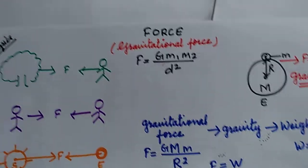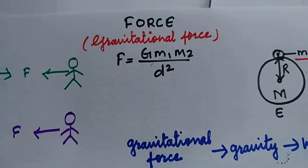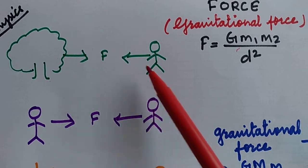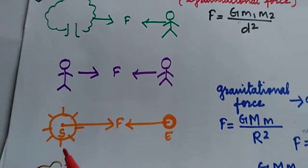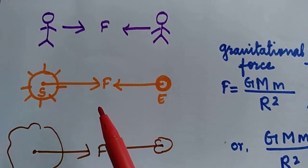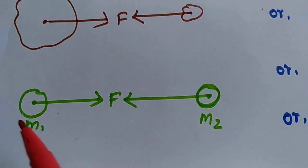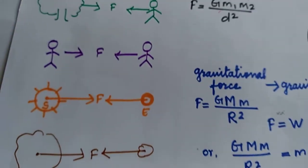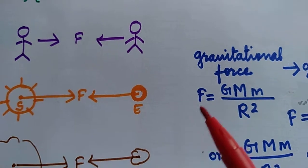We are going to study the physics chapter on force, specifically gravitational force. We know force is a push or pull. There is a force between any two objects in the universe — between a tree and a man, between two people, between the sun and the earth, and between any large and small objects. Bodies with mass m1 and m2 exert force on each other, keeping the sun, earth, and moon in their positions. This is called gravitational force.